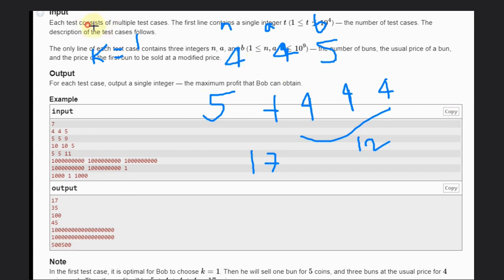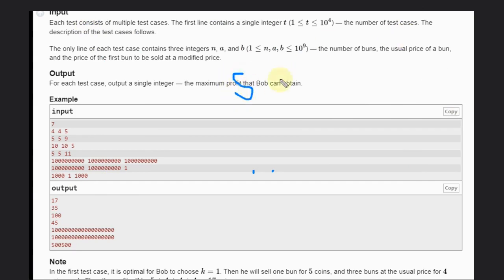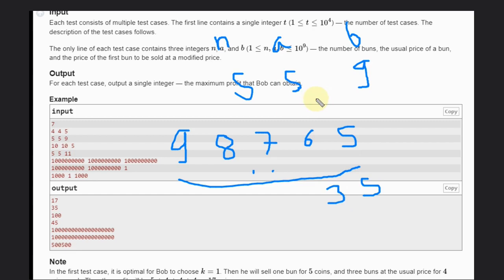Let's see another case for understanding. Here we have n equals 5, a equals 5, and b equals 9. He can try to sell one item at 9, and then 8, 7, 6, and 5. The summation of this will be 35. You don't need to sell at the usual price a equals 5; we can choose k to sell all the ones at the modified price.